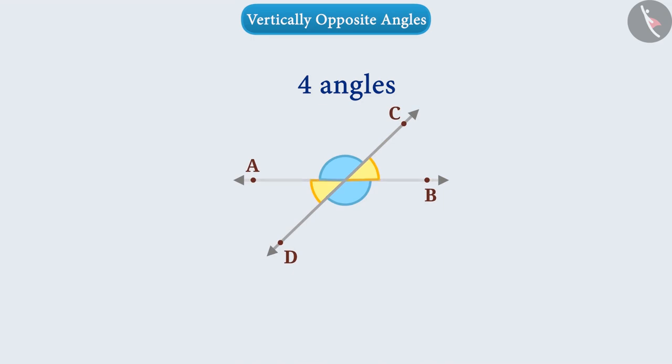As you can see here line AB is intersecting line DC at point O. Due to which four angles are being made here. Can you tell what they are?